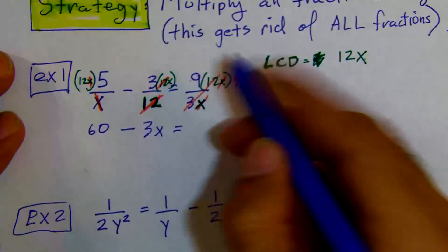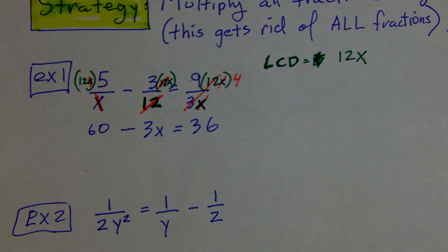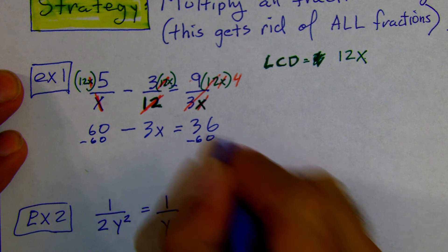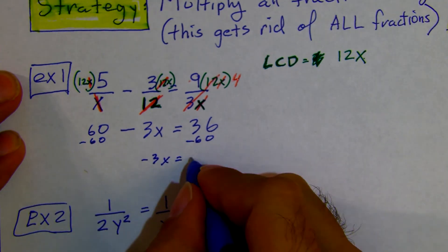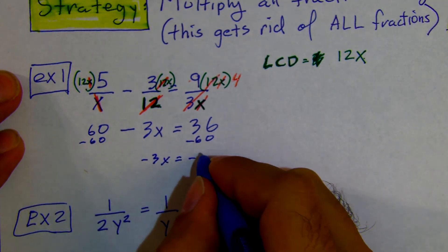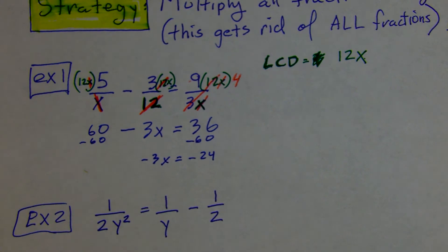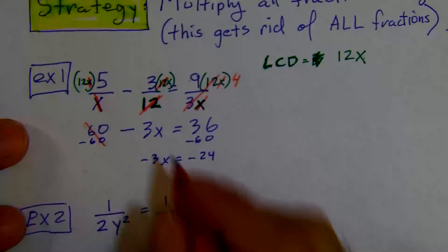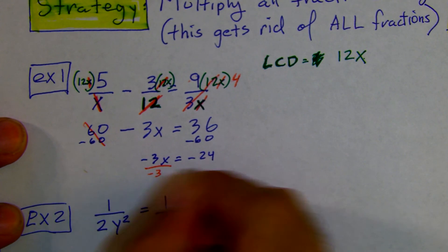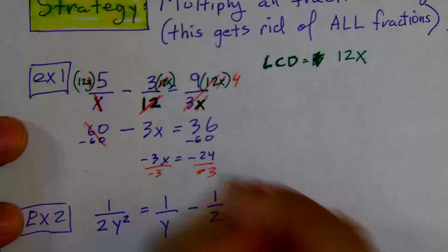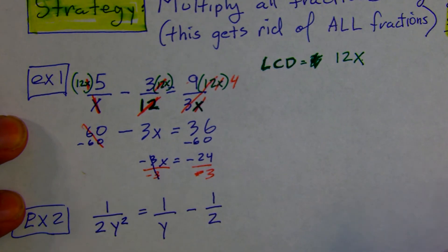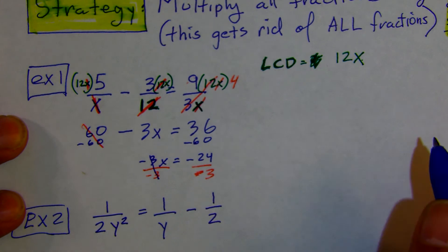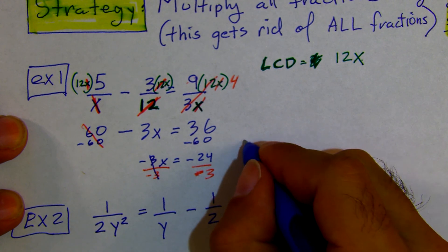We had 9 times 4 equals 36. Once you did all the work, the second half of this problem is basically Math 1. We subtract 60 from both sides: negative 3x is equal to negative 24. Then we divide by negative 3 — it cancels — and we get x is equal to 8.